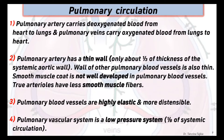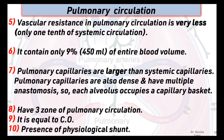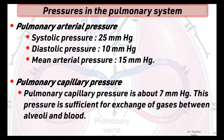Fourth, the pulmonary vascular system is a low pressure system, which is one eighth of systemic circulation. Fifth, vascular resistance in pulmonary circulation is very low, only one tenth of systemic circulation. Sixth, it contains 9 percent of the entire blood volume. Seventh, pulmonary capillaries are larger than systemic capillaries and are dense with multiple anastomoses, so each alveolus occupies a capillary basket. Eighth, lungs have three zones of pulmonary circulation. Ninth, it is equal to cardiac output. Finally, there is the presence of a physiological shunt in pulmonary circulation.